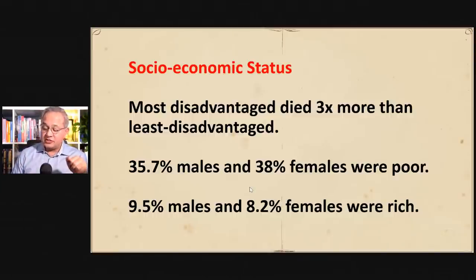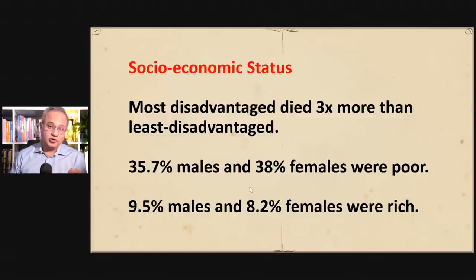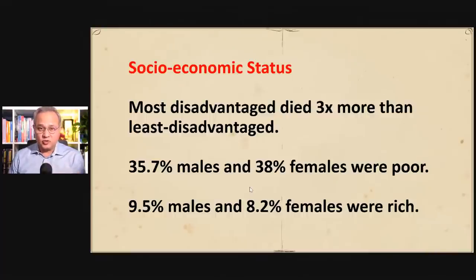They have five tiers of socioeconomic stratum. 35.7% of males and 38% of females who died were in the most disadvantaged tier five, compared to only 9.5% of males and 8.2% of females in the least disadvantaged tier one. That is how large the difference was.